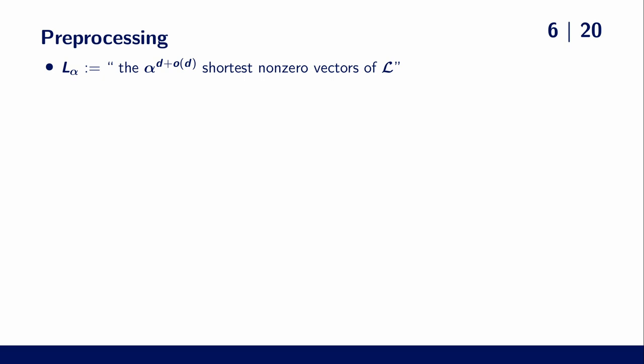So let's fix some size parameter alpha and let our list contain all alpha to the d shortest non-zero lattice vectors.